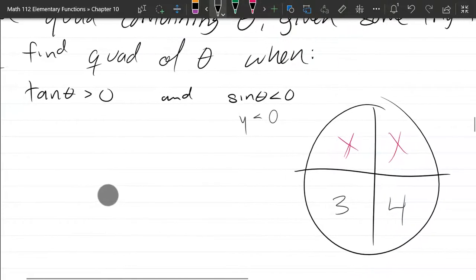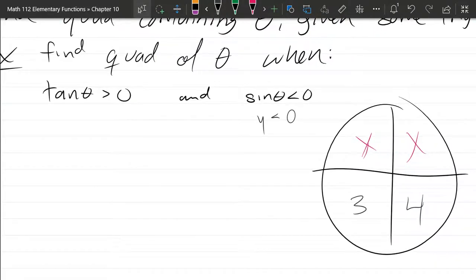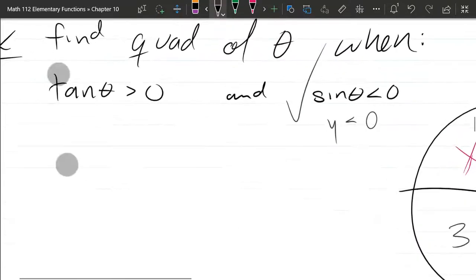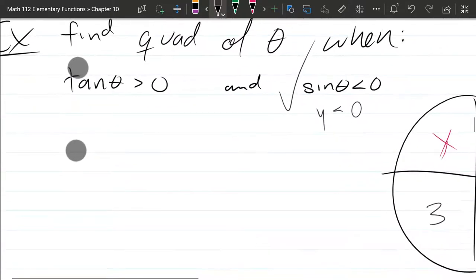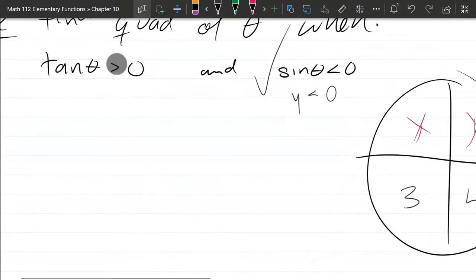All right, the other information we have is tangent is greater than zero. So let me go ahead and put a check next to the sine being negative. We've squeezed all the information out of there as we can. We're just gonna focus on this tangent being positive. All right, what quadrants is tangent positive?